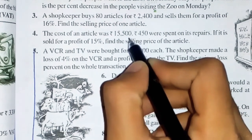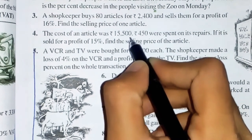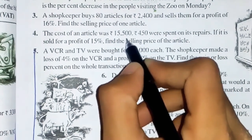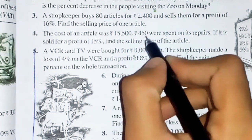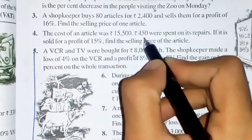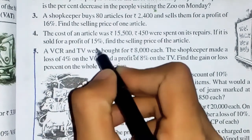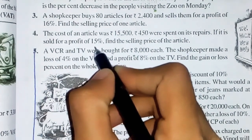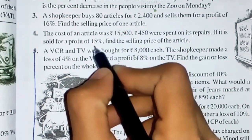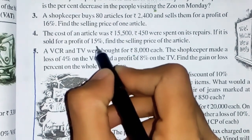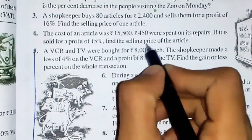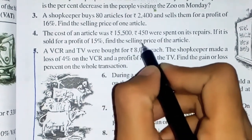After adding both, whatever we get, we have to take that as the total cost price — total CP. The repair cost is not part of the market price, but when the article is sold he is getting a profit of 15%. So we need to find the selling price of the article.